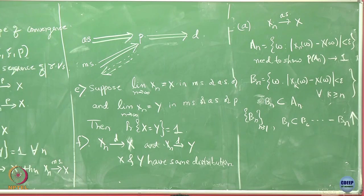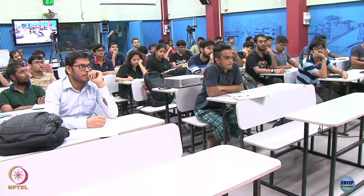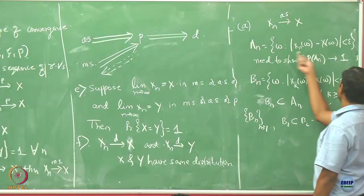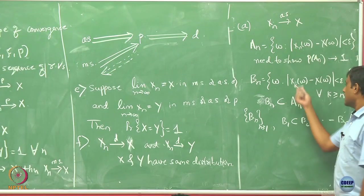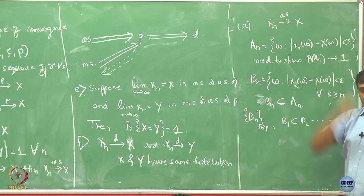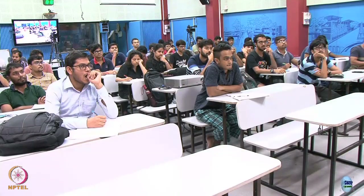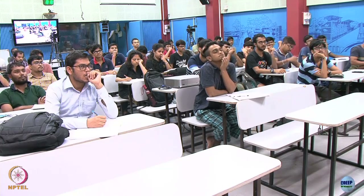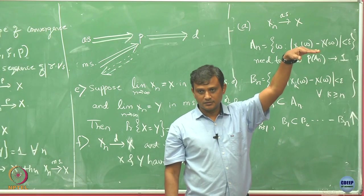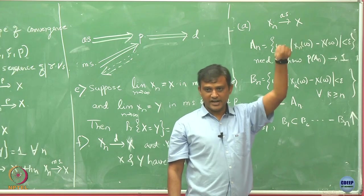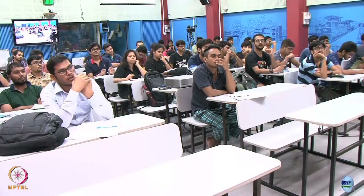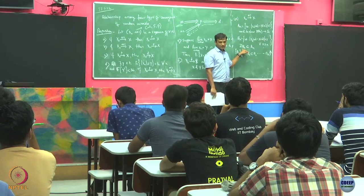B_n requires the condition to be satisfied for all k ≥ n. A_n only requires it at the single index n. So a point in A_n need not belong to B_n, confirming B_n ⊆ A_n. Now consider any omega satisfying the almost sure convergence limit definition — by the definition of the limit, for that omega there exists N(epsilon, omega) such that |x_k(omega) - x(omega)| < epsilon for all k ≥ N.